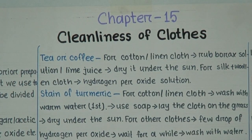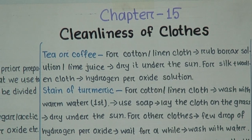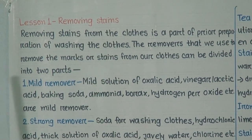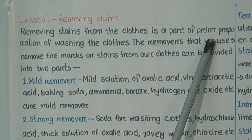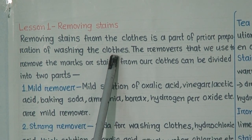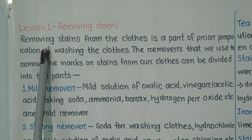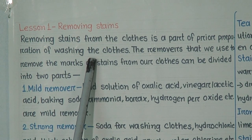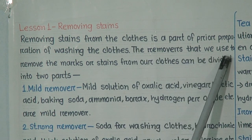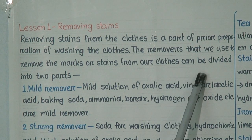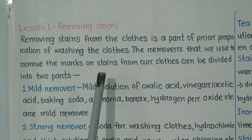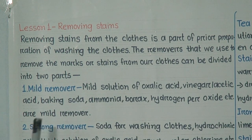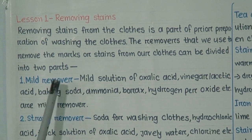Chapter 15, named 'Tenderness of Plots.' We will start our class with the discussion of Lesson 1: Removing Stains. Removing stains from cloth is a part of prior preparation of washing the cloth. Before washing our cloth, we have to remove any stains. The removers we use can be divided into two types: mild remover and strong remover.